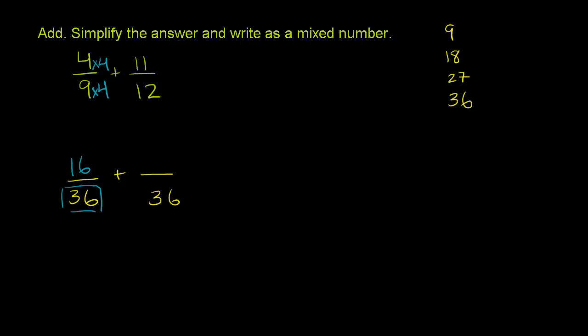Now we do the same thing over here. 36 is 12 times 3. So we're multiplying 12 by 3 to get 36. Well, if we did that to the denominator, we also have to do that to the numerator. So 11 times 3 is 33. And just like that, we've now rewritten each of the fractions so that they have the same denominator. Both of their denominators is 36.